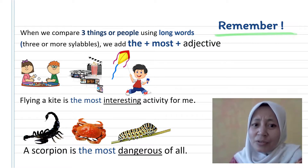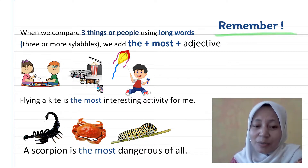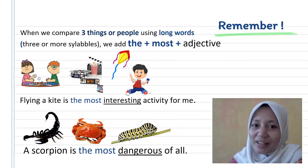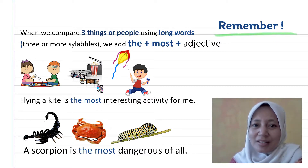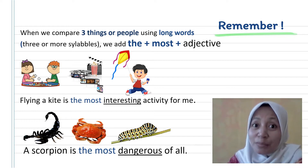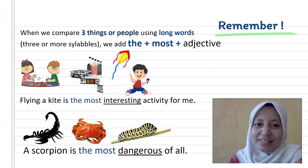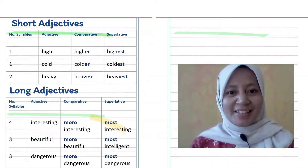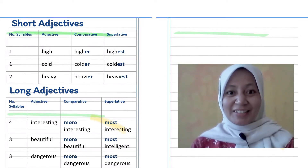Second example: I have three small animals — a scorpion, a crab, and a caterpillar. We use the word 'dangerous,' which has three syllables. The sentence is: 'A scorpion is the most dangerous of all.' These are the tables to sum up our lesson today on comparative and superlative adjectives. I'll see you in the next session — bye!